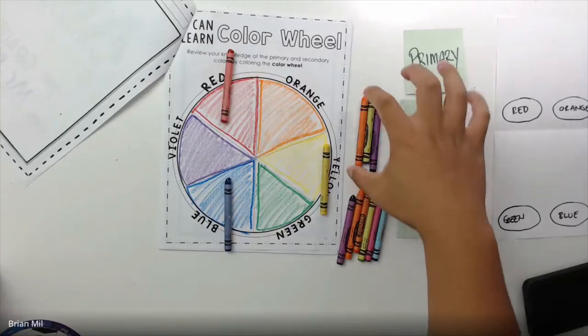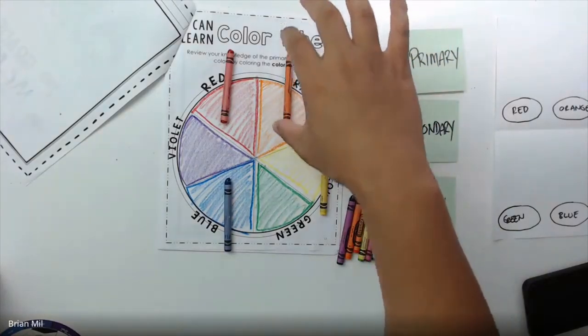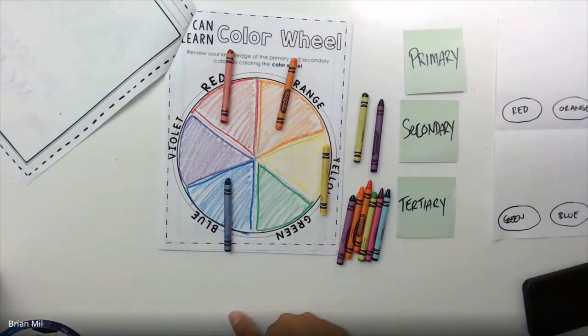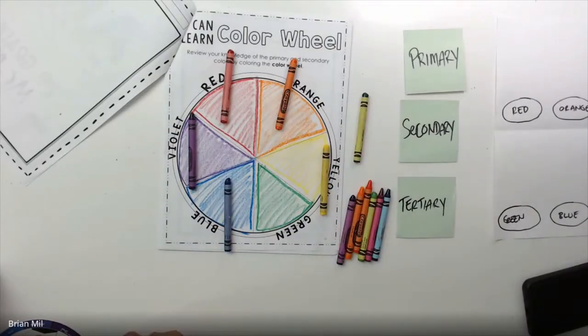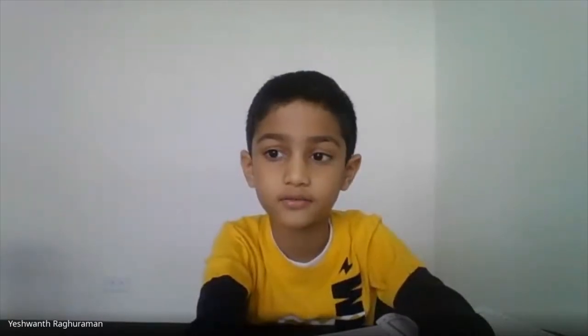I'm gonna pick Afra. Orange. Good job, so I'm gonna place orange right here. Next color, what is red plus blue? Anyone? Let's see, I'm gonna pick Gabriela. Purple. Good job. Also known as violet. And last but not least, who wants to tell me what blue plus yellow is? Blue plus yellow? Green. Good job.